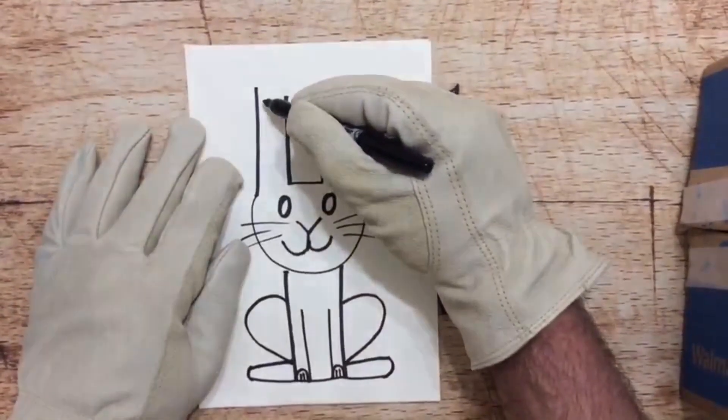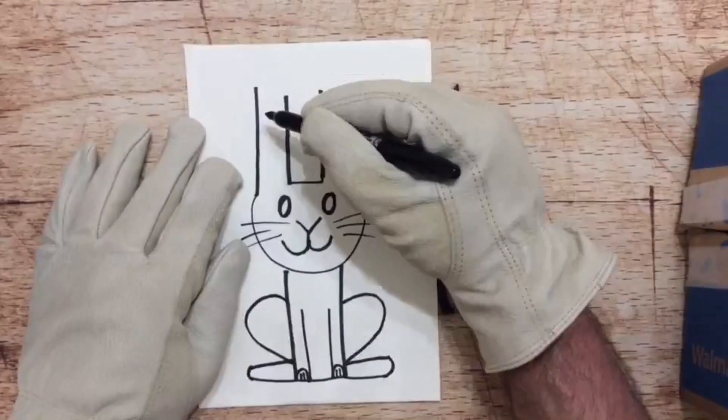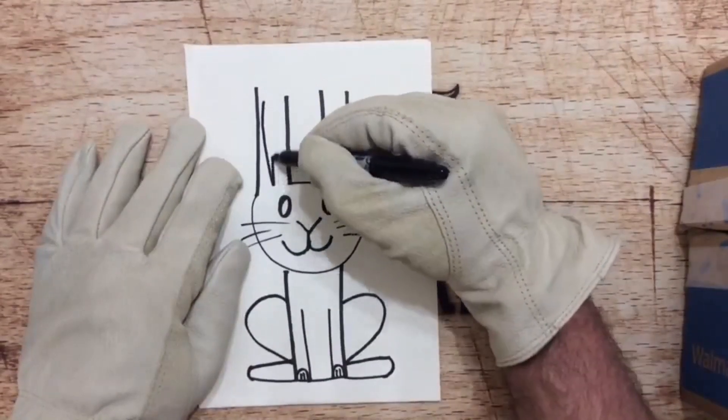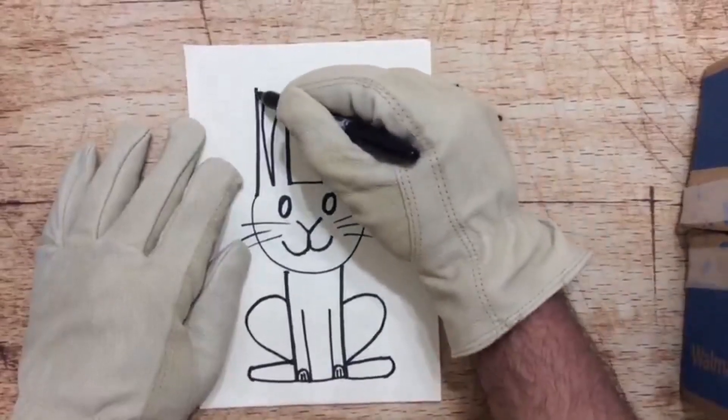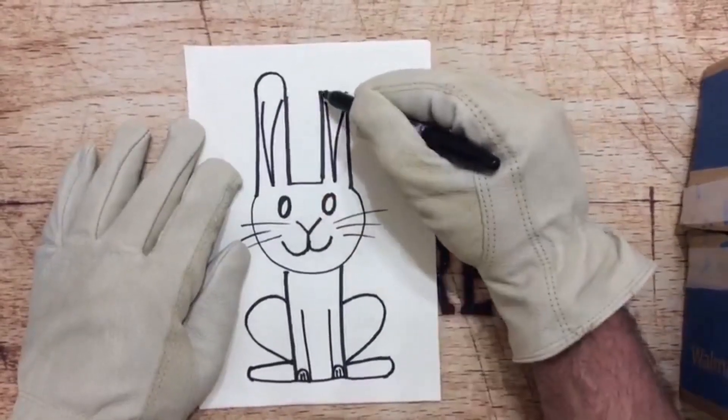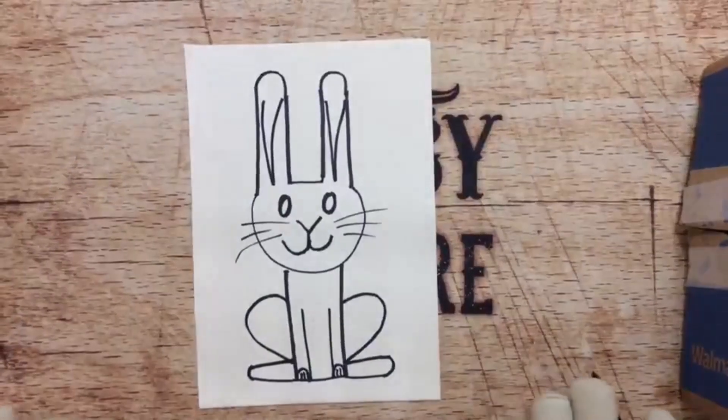So we're going to do some skinny, skinny letter V's. We're going to come over here, skinny letter V, skinny letter V. And just close it off with a nice little lowercase n, rounding off the top of them bunny ears.